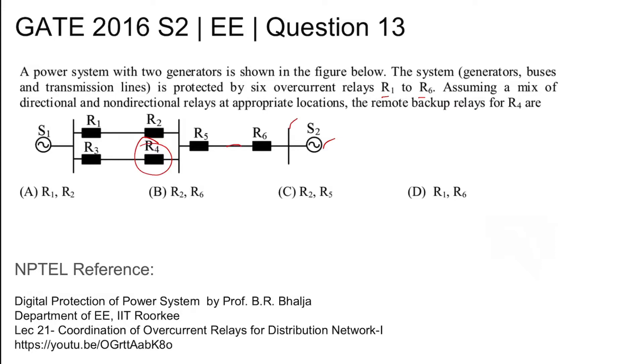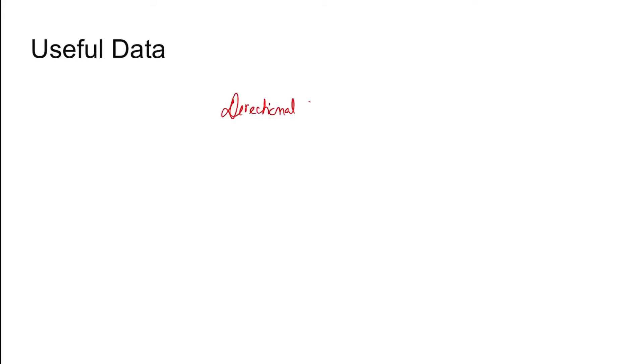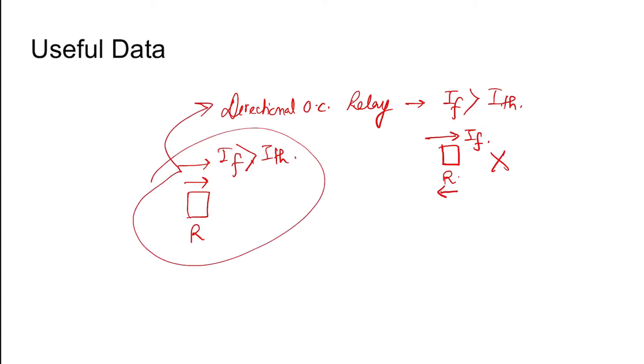The property of a directional overcurrent relay is that the fault current must be greater than the threshold current and must be in a particular direction. For example, if this is the fault current through this relay and the relay direction is this, then the relay will not operate. The relay will operate only if the direction of the fault current matches the direction of the directional overcurrent relay and is greater than the threshold value. So this is the working principle of a directional overcurrent relay.